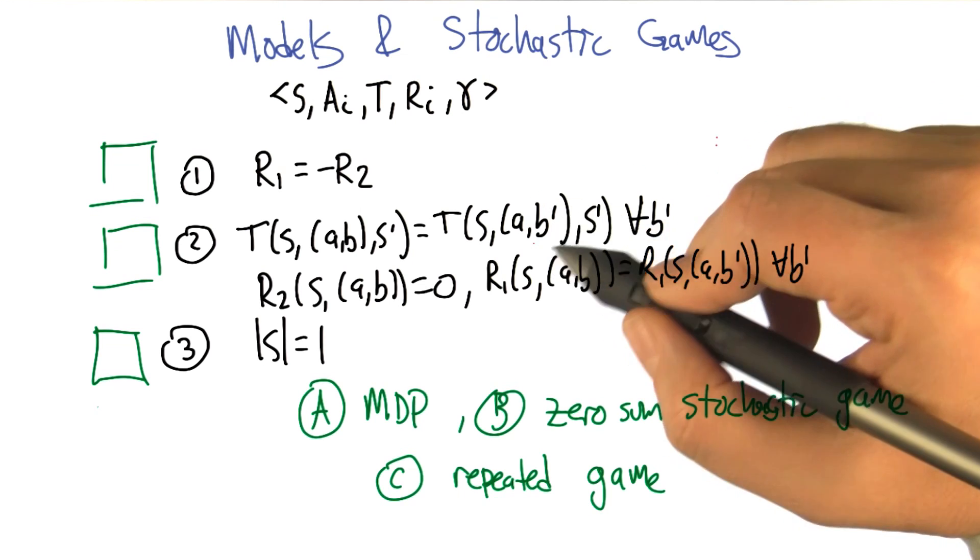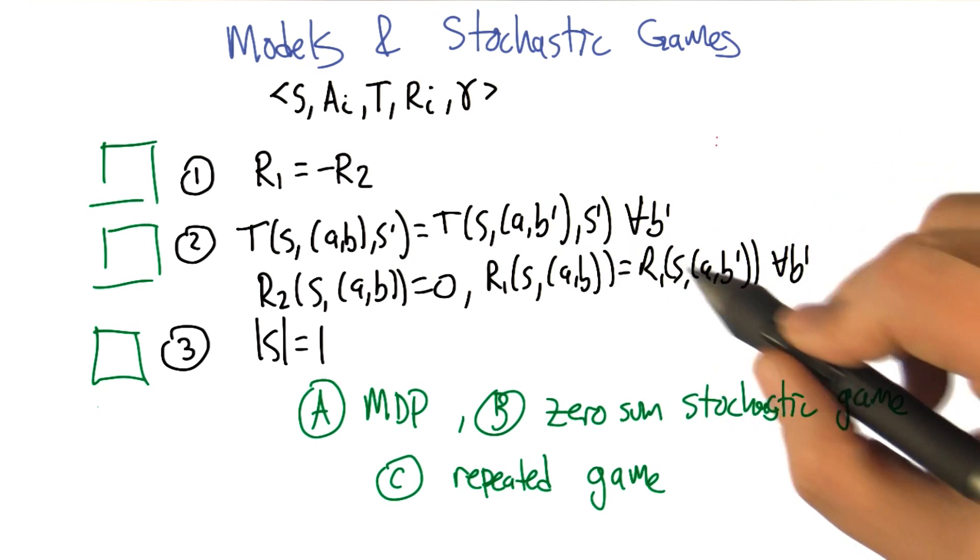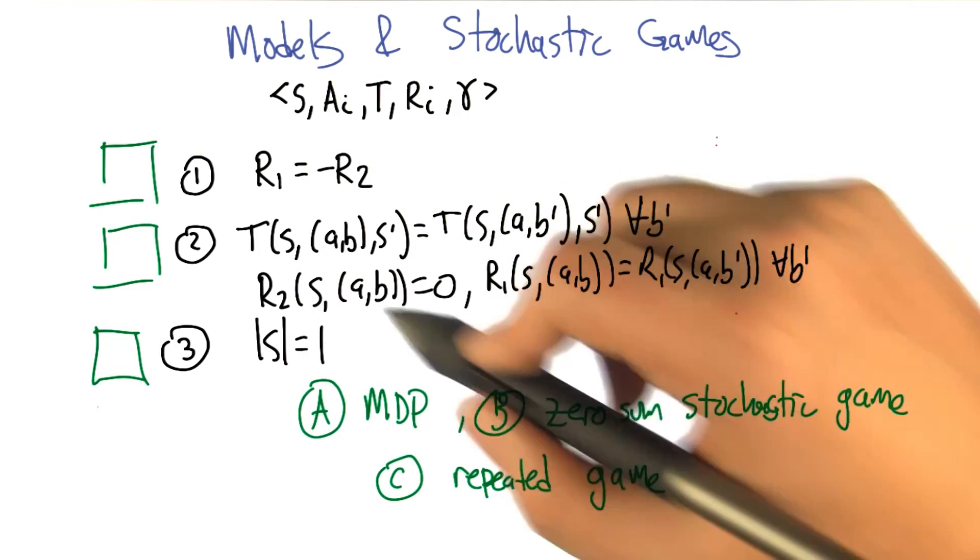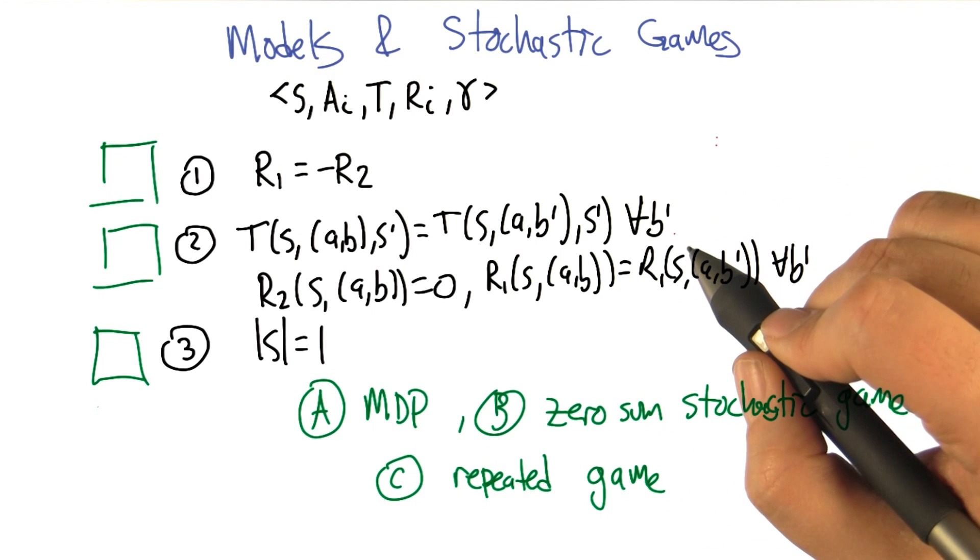So basically player two doesn't matter to the transitions or the rewards for player one, and the rewards for player two are always zero. So that's again, you can specify this as a stochastic game.